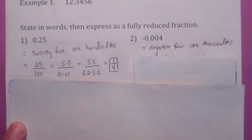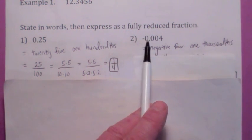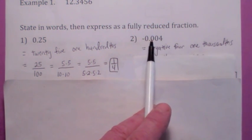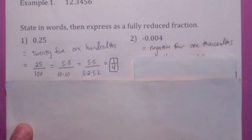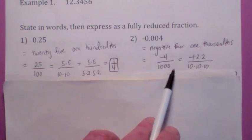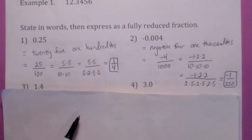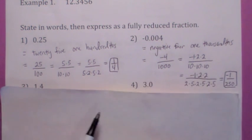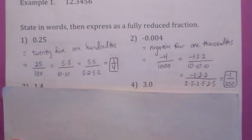On this one, we have a negative — this is the tenths, hundredths, and thousandths — this is negative 4 one-thousandths. So if you write it as a fraction, you get negative 4 over 1,000. Now remember, 1,000 is 10 times 10 times 10, so if you factor this down, you can cancel the twos and you end up with negative 1 over 250.